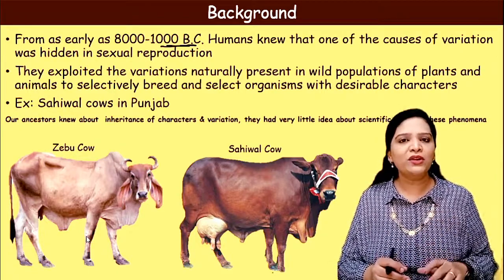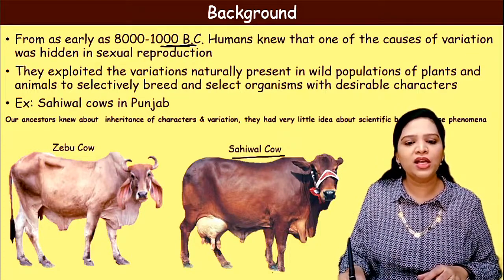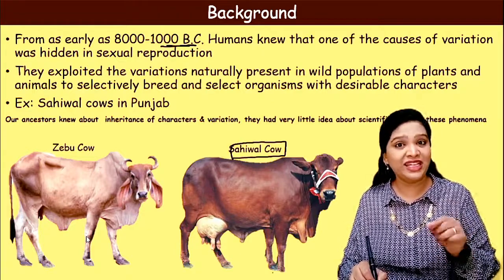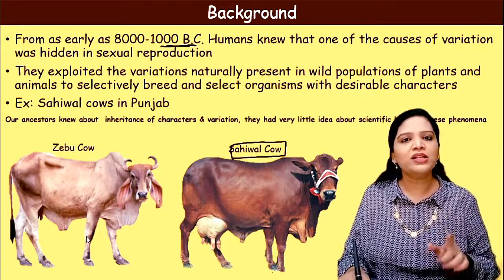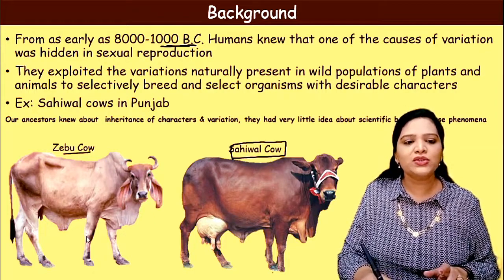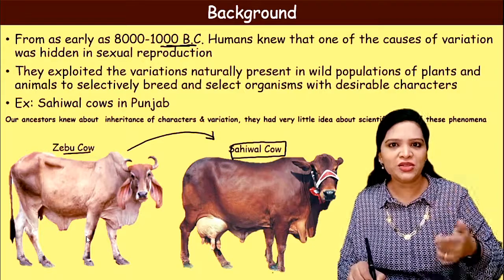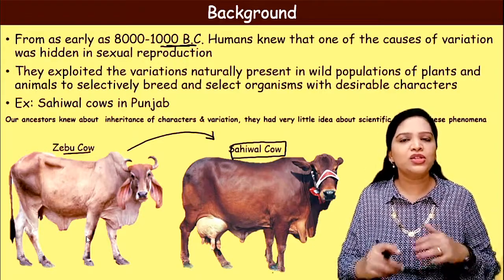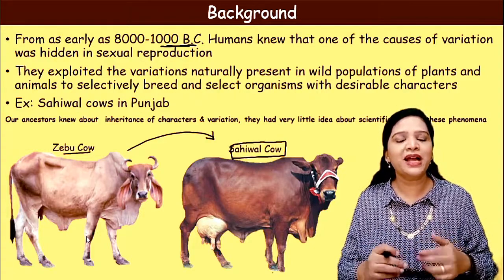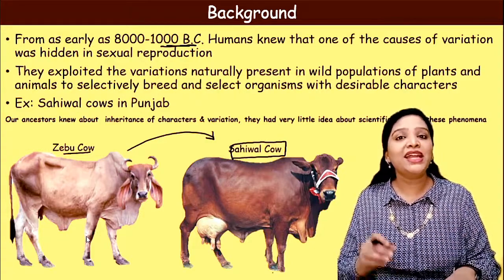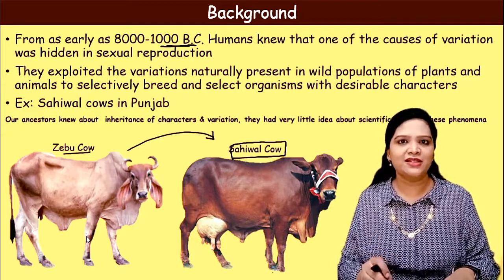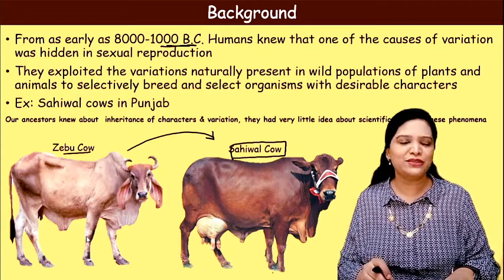One example of early crossbreeding is the Sahiwal cow. The Sahiwal cow is the best dairy breed available in India and Pakistan, originally bred from the Zebu cow. Our ancestors knew that by crossbreeding animals and plants, we get a superior variety — but they didn't know exactly how it occurs or what the scientific reason for this phenomenon was.